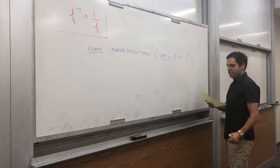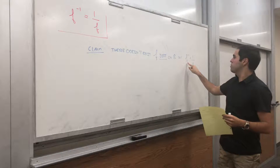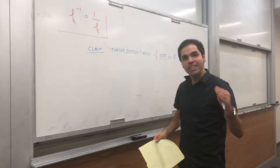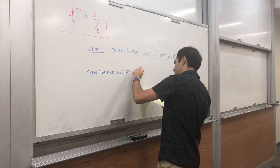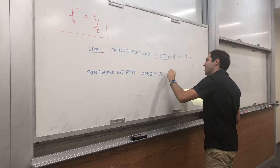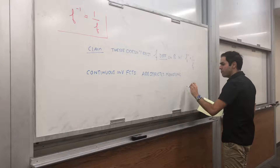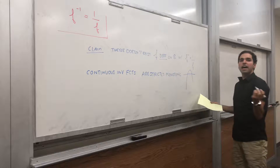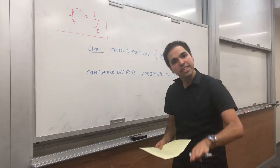So why doesn't there exist such a function? First of all, if you remember, if a function is continuous and invertible — and we assume f is invertible, otherwise f inverse doesn't make sense — it can only be strictly increasing or strictly decreasing. Continuous invertible functions are what's called strictly monotonic, which means they're either strictly increasing or strictly decreasing.